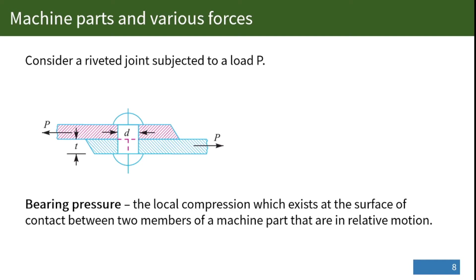It may be noted that the local compression which exists at the surface of contact between two members of a machine part that are in relative motion is called bearing pressure. This term is commonly used in the design of a journal supported in a bearing, pins for levers, crank pins, or clutch lining.